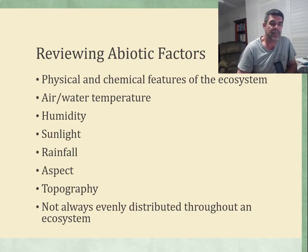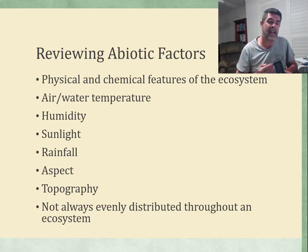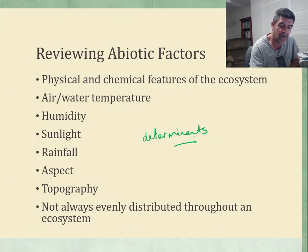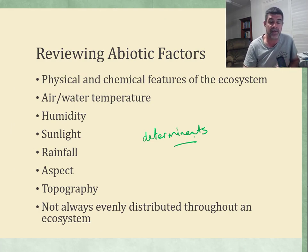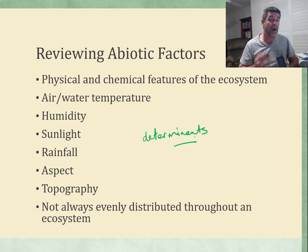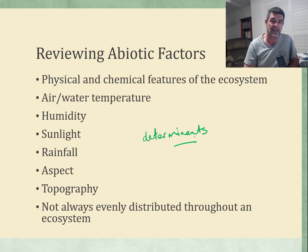Let's review them. The most important thing we need to look at are some of these abiotic factors which are determinants of the ecosystem itself. These factors can impact on exactly what type of ecosystem we have. Abiotic factors are the non-biological components of the ecosystem, including physical and chemical features of each of the ecosystems.